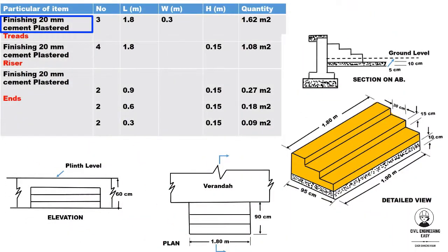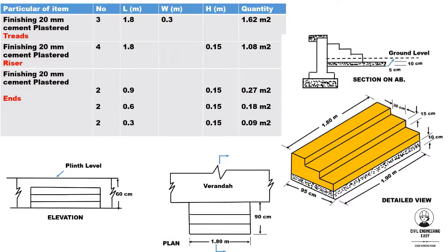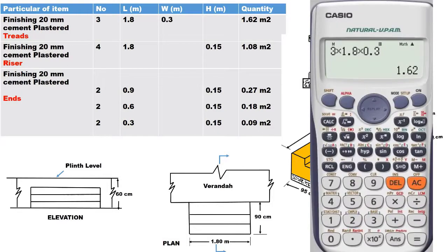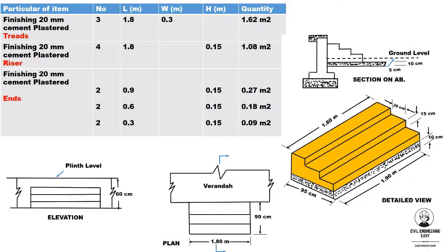For the finishing cement plaster quantity having a thickness of 20 mm, first we need to find the plaster quantity of the three treads. The length of treads is 1.8 meter and the width of treads is 0.3 meter. The total quantity of plaster in three treads is 3 × 1.8 × 0.3, equal to 1.62 square meter.